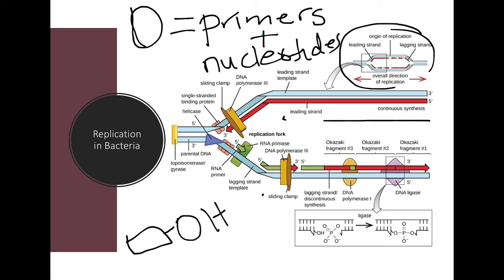DNA ligase will come in and seal those backbone ends by making the bonds. DNA polymerase 1 comes in to fill in that gap, whereas DNA polymerase 3 is the main one. The leading strand is continuous because the parent strand is 3 to 5 and it will have no issues making 5 to 3 — maybe just needing one primer to start. In the lagging strand, RNA primers are made by RNA primase, DNA polymerase synthesizes the Okazaki fragments, then DNA polymerase 1 replaces the RNA primers with proper DNA, and DNA ligase seals up the rest.